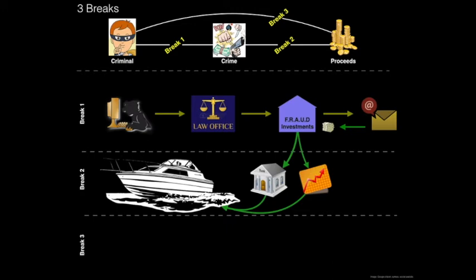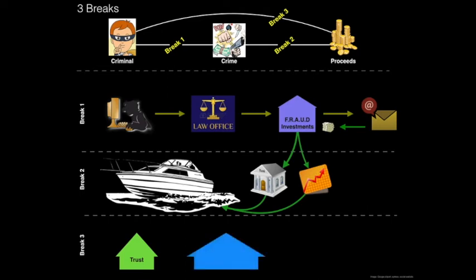In break three, the fraudster is clever enough not to risk owning the yacht in his own name, recognising the risk of being connected to the fraud through the yacht. Instead, he owns the yacht through a trust, administered on his behalf by a private bank-owned company. The trustees in turn own a company which acts as the legal registered owner of the yacht. In this way, the fraudster's connection to the yacht is disguised, but he still gets to enjoy the proceeds of crime.